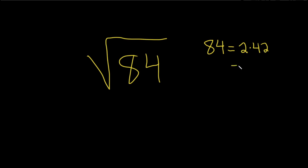So we can break up 42 as 2 times 21, and then we see here that 2 times 2 is 4. And 21 is 3 times 7, so that's not going to help us. So here we have 4 times 21.